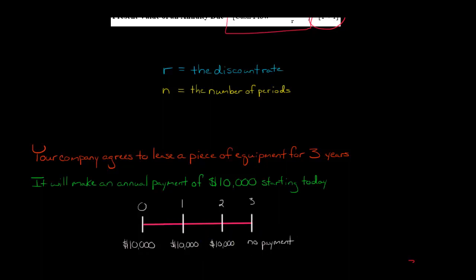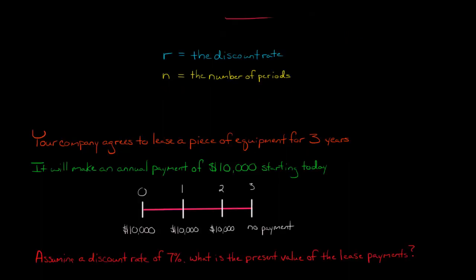If we were doing an ordinary annuity, there'd be no payment today, then $10,000, $10,000, and $10,000 at the end of the third year as the final payment. That's the only difference, and that's why we multiply by 1 plus r to change our equation.